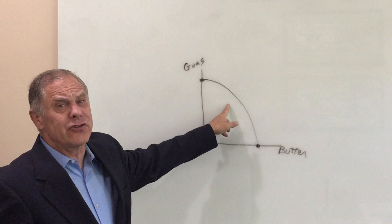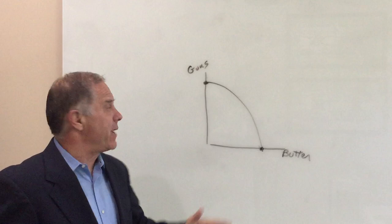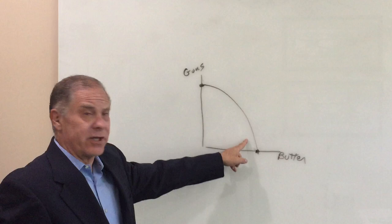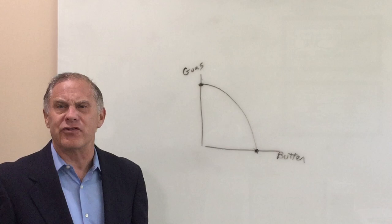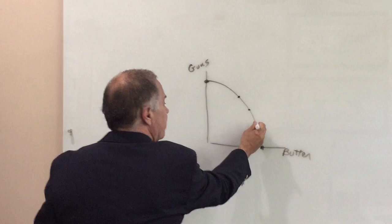You notice I drew the line curved this time instead of straight. That's because in reality, the line is curved, because some resources are better for making one good versus another. So when you see the curve in the book, it will be curved. If you have full employment, everyone's employed, everyone's working, you'll be on the curve somewhere.